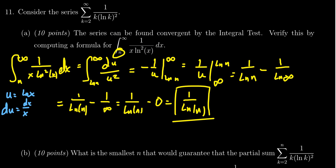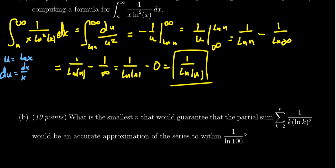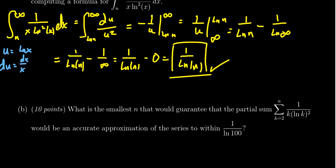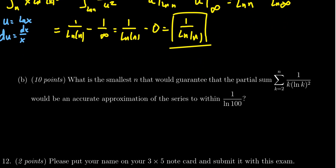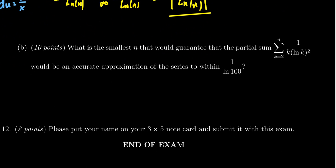Now, we integrated this from n to infinity as opposed to 2 because we're not just after the convergence, we're also after the error bound. So this right here gives us an error bound with regard to the integral test, as we can use this to approximate things.